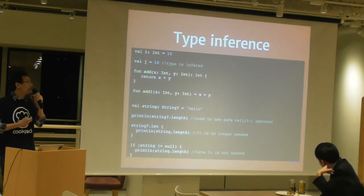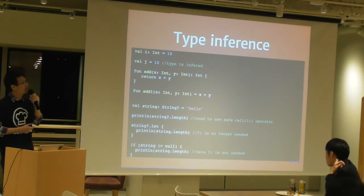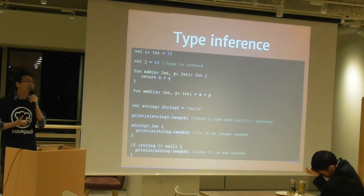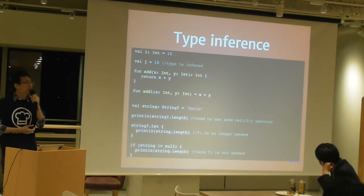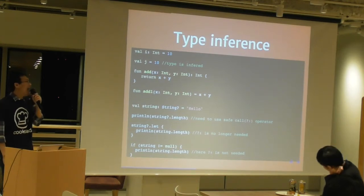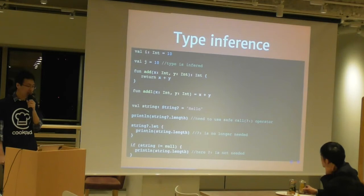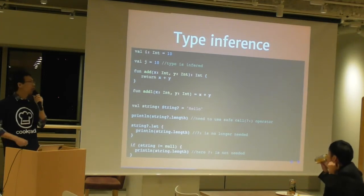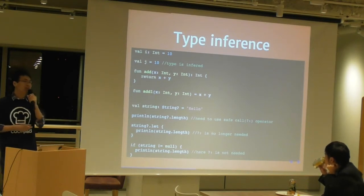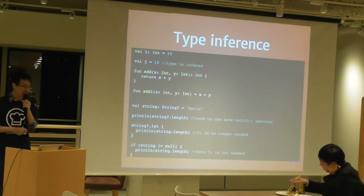Another thing I really like about Kotlin is type inference. For example, you can say 'val int = 10' on the first line, but since you already assigned a value to it, you can just omit the explicit type and say 'val j = 10.' The compiler knows right away that j is an Int, so you don't have to type it out. That also applies to functions — for example, 'add' is accepting two integers x and y and returning an Int by summing them together. But here you can also use the equals sign to let the compiler know this function returns x plus y right away — you don't have to say it's returning Int or anything like that.